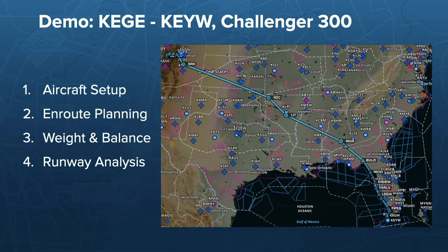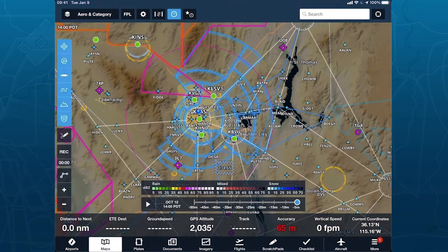I'm going to do a live demo today rather than static screenshots. We're going to go from Eagle County Airport in Colorado down to Key West with a Challenger 300. I'm going to step through aircraft setup, the en route planning, the weight and balance components to load up an aircraft, and then finally runway analysis. Let's get started.